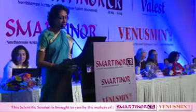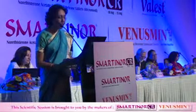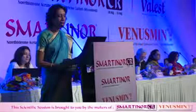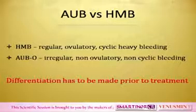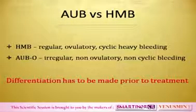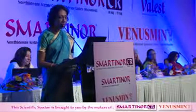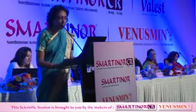There's only one subclass that can be treated medically right away, and that is AUBO. The differentiation has to be made prior to treatment, and also from AUB to heavy menstrual bleeding, or HMB. HMB is regular ovulatory cyclical heavy bleeding, whereas AUBO is irregular, non-ovulatory, non-cyclic bleeding — and that is the only subsegment that can be treated medically. When it comes to that, the underlying pathophysiology has to be thought about and a logical approach must be there.